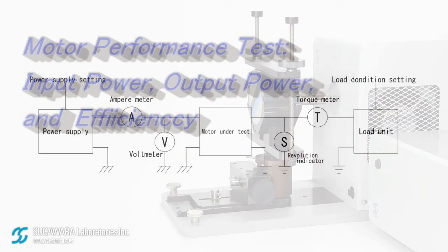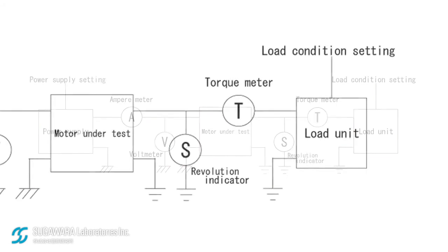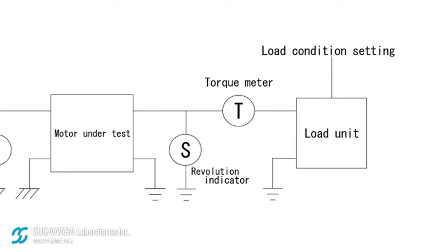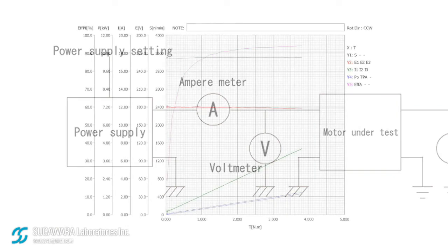The performance curve is the most basic property of motors that convert electric input to mechanical output. Running the motor under test, the dynamometer gives external load and measures torque, speed, and output power. The power meter measures voltage, current, and input power, and calculates efficiency from the input and output power.